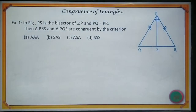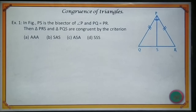Congruence of triangles. Example 1. In figure, PS is the bisector of angle P, and PQ is equal to PR. Then, triangle PRS and triangle PQS are congruent by the criterion: AAA, SAS, ASA, or SSS.